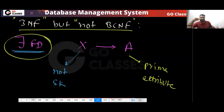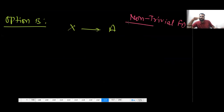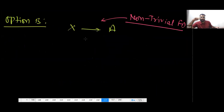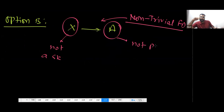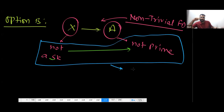Option B says: X determining A is a non-trivial FD, X is not a super key, A is not prime. This — a non-super-key determining a non-prime attribute — is a violation of 3NF. So because of option B, you can say not 3NF.